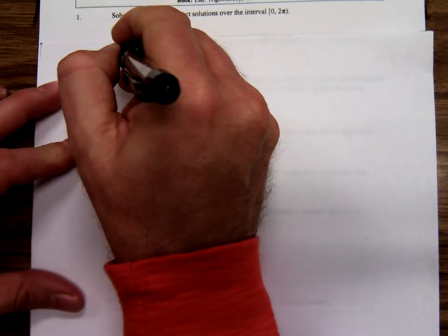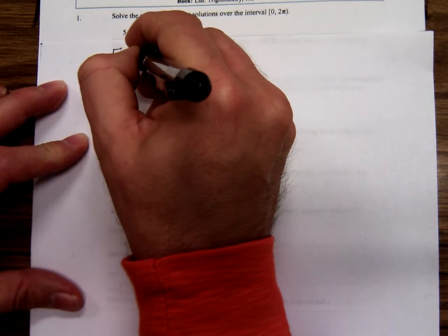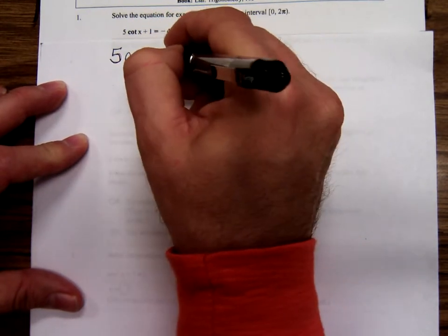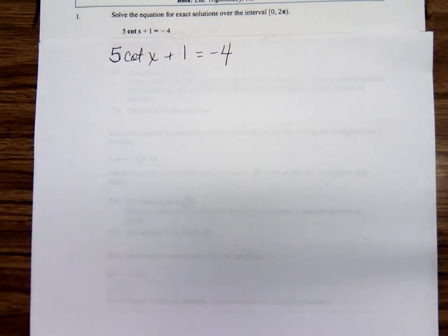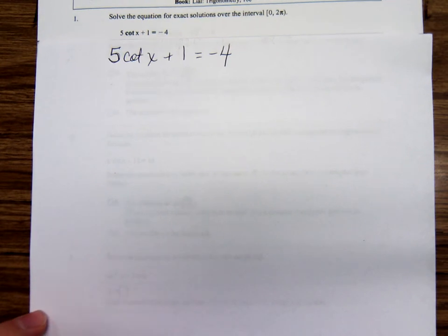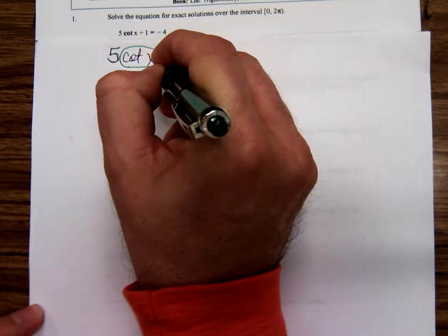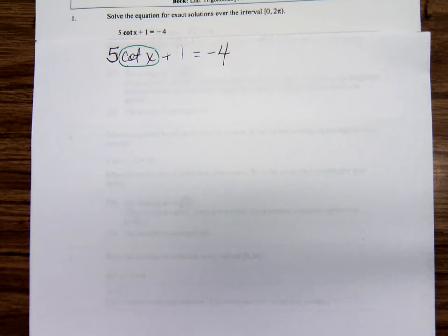This problem, 5 cotangent x plus 1 equals negative 4. If you're solving an equation and there's just one trig function in it, treat that trig function as if it's the variable. How would I go about isolating this cotangent x?